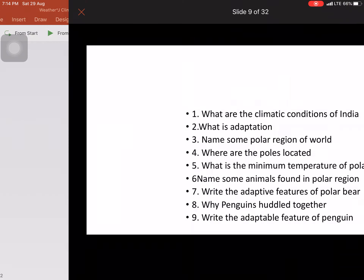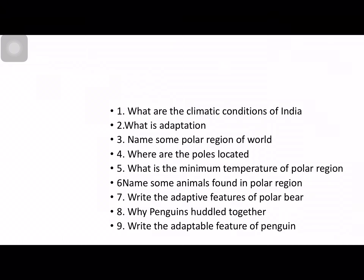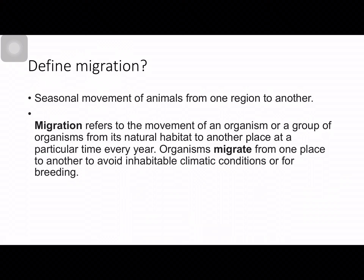There are some questions from this section: what are the climatic conditions of India, and what is adaptation? You should answer these. Now, what is migration? Many animals live in polar areas, but the winters there are very cold — below minus 37 degrees Celsius — so how do they survive?